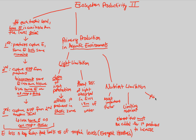In marine ecosystems, the limiting nutrients are usually nitrogen and phosphorus — both are critical limiting nutrients in these environments.